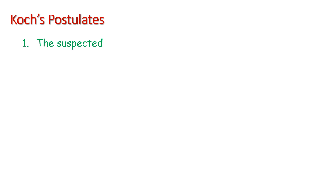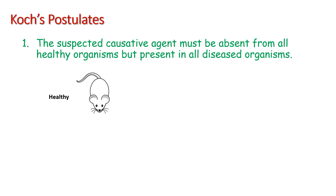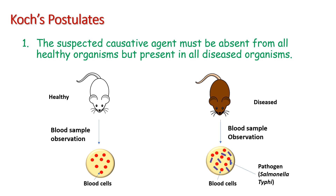The first postulate states that the suspected causative agent must be absent from all healthy organisms but present in all diseased organisms. If we take a blood sample of any healthy organism and observe it using microscopy or staining techniques, we can see only pure blood cells. Whereas if we examine a blood sample of a diseased organism — for example, an organism suffering from typhoid — its blood sample shows blood cells along with Salmonella typhi cells, which are responsible for the disease, while the healthy organism's blood sample shows only blood cells, not any microbial cells.